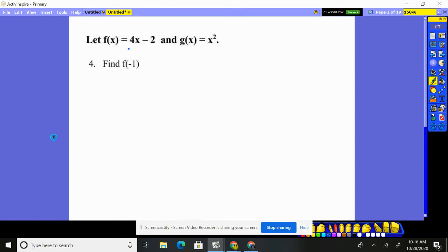Now, that means I go to the f function, which is right here, and it says do four times whatever they give you, take away two. So I'm going to do four times whatever they give me, because they gave me negative one, and then take away two.